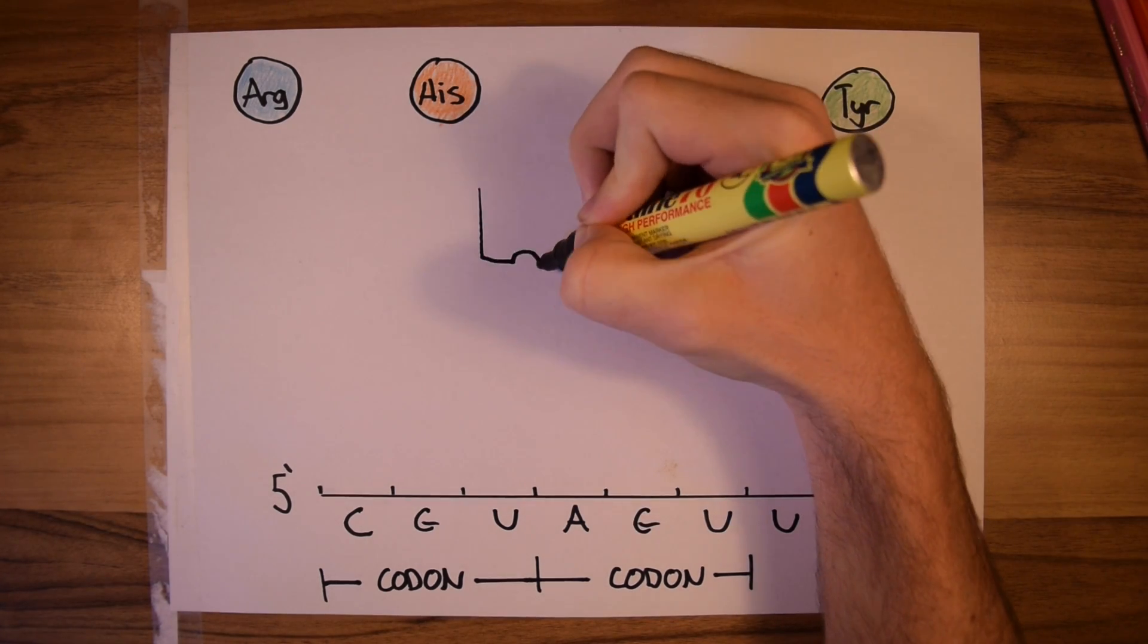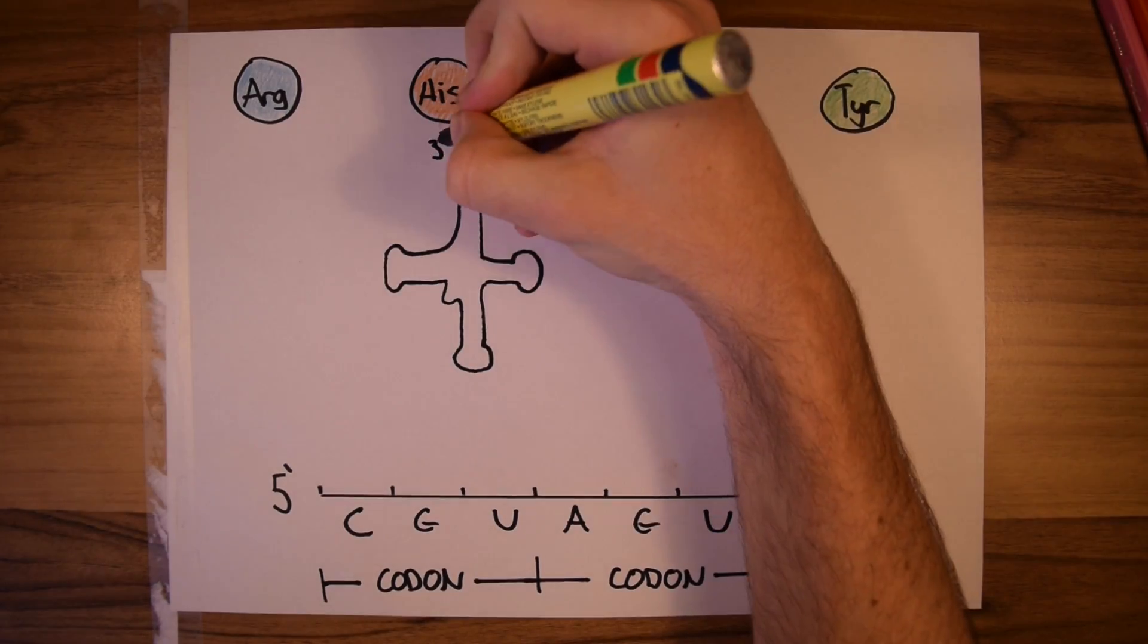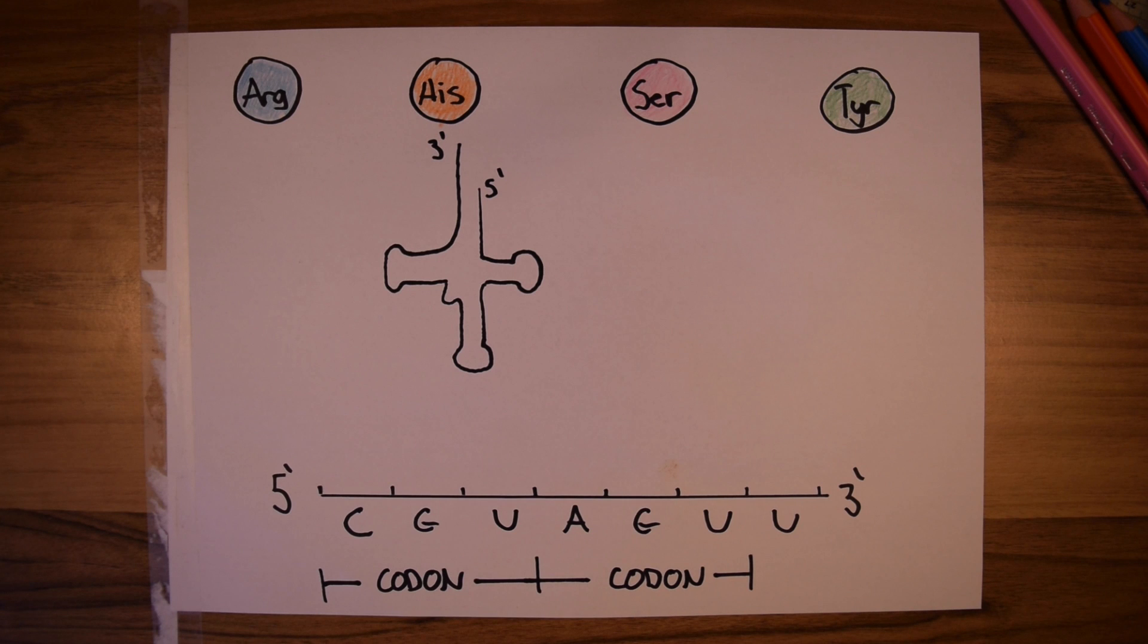This clover leaf-like structure is known as a tRNA or transfer RNA. What tRNA does is serve as an adapter between the mRNA and the amino acids, hence the name transfer RNA.